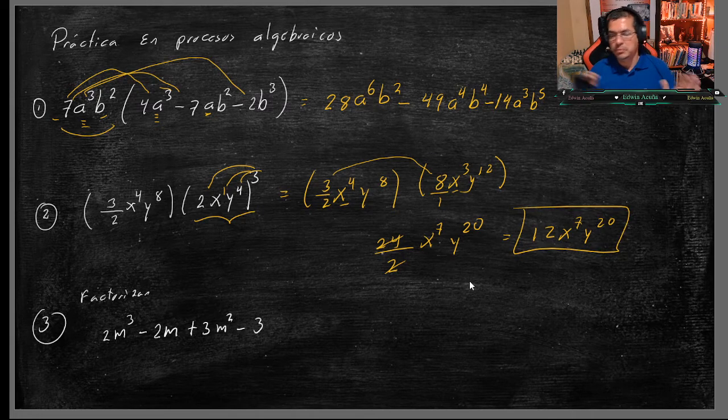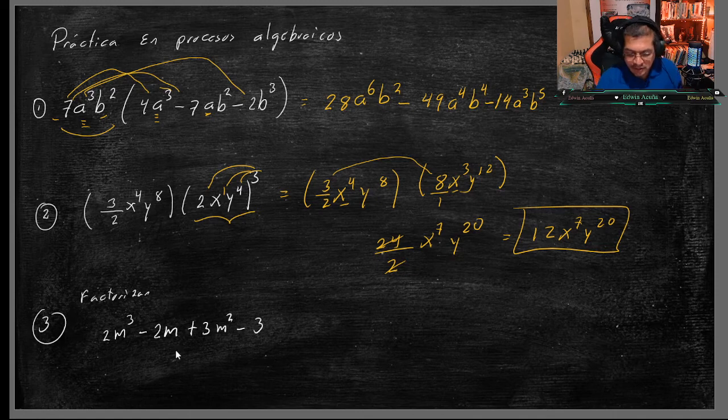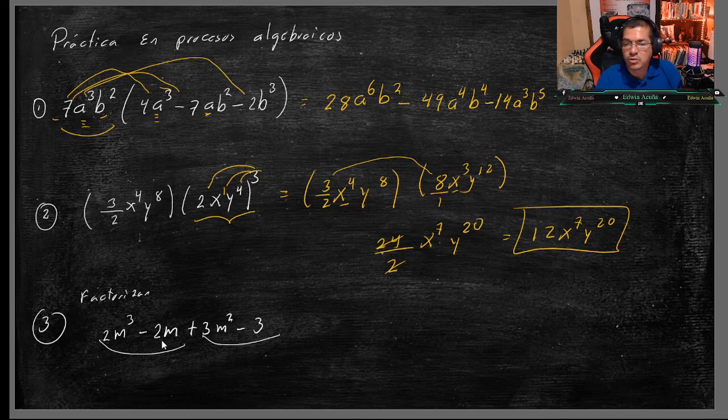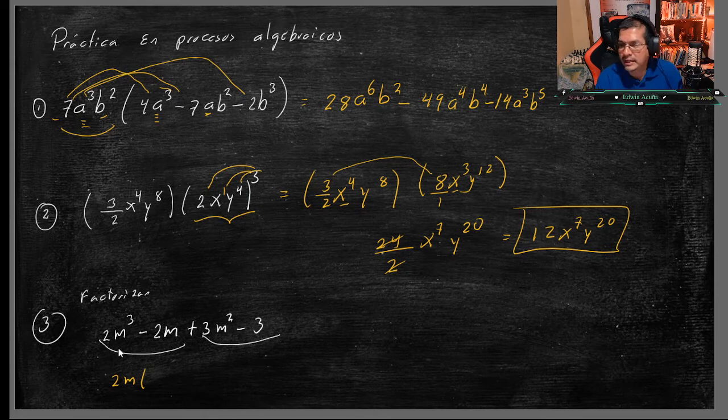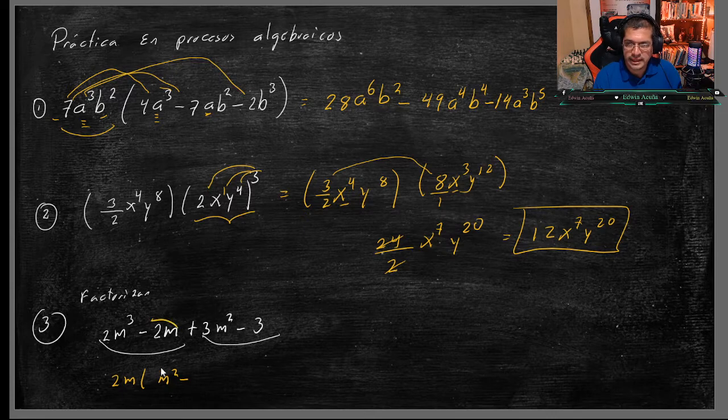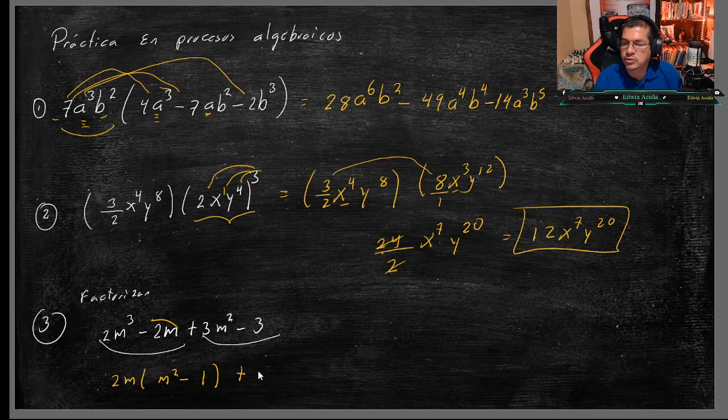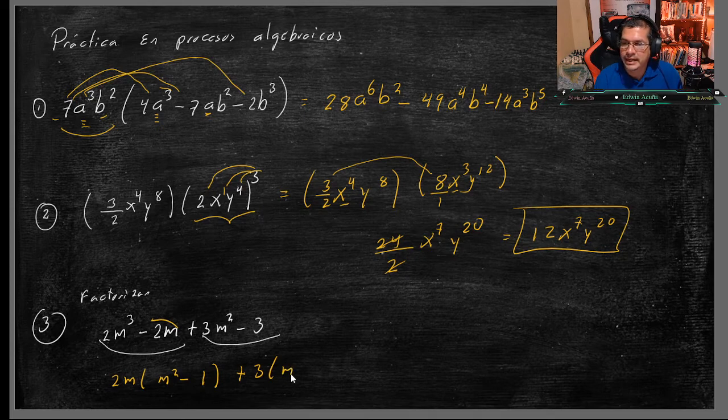Factorización, porque esto es como tipo una prueba. Cuando es factorización, siempre traten de agrupar de 2 en 2, agrupo estos 2 y estos 2. Saco un factor común, aquí se repite el 2 y una M. Al 2 sacar no queda nada, a M3 le quito una M, sería M2. En este caso saco los 2, entonces me quedaría 1, más, aquí saco un 3 a factor también, me quedaría M2 menos 1.